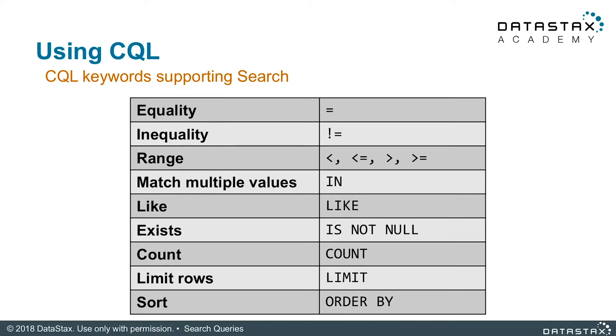Now that we understand why we should use DSC Search Indexes, how can we use them with CQL? This table shows all the CQL keywords supporting search: equality, inequality, range, match multiple values, like, exist, count, limit rows, and sort. We will discuss a few of these terms in more detail here in just a bit.